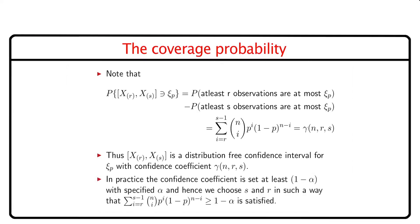In practice, the confidence coefficient is set at least 1 − α for specified α, and hence we choose r and s such that γ(n,r,s) ≥ 1 − α. We have discussed different hypothesis testing problems in non-parametric inference, but did not provide any specific testing problem. In our forthcoming modules, we shall discuss these one by one and also show how the cutoffs of different non-parametric tests can be used to obtain a distribution-free confidence interval for the concerned parameter.